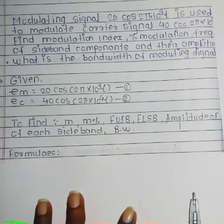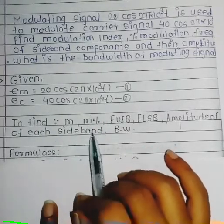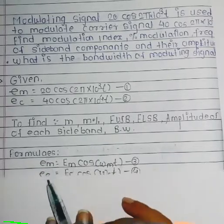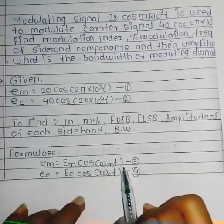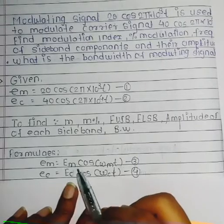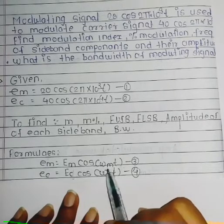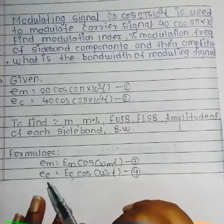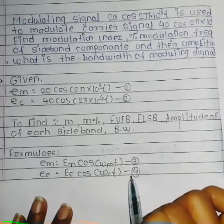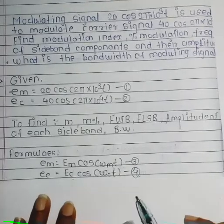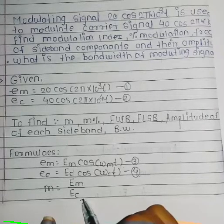We identify the formulas to use. The standard equation of the modulating signal is Em cos(ωm·t) and the carrier signal equation is Ec cos(ωc·t), as already seen in the derivation of amplitude modulation.